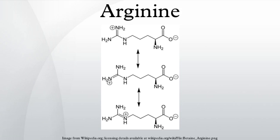Arginine is a conditionally non-essential amino acid, meaning that most of the time it can be manufactured by the human body and does not need to be obtained directly through the diet. However, the biosynthetic pathway does not produce sufficient arginine, and some must still be consumed through diet. Individuals with poor nutrition or certain physical conditions may be advised to increase their intake of foods containing arginine.